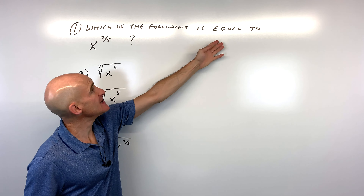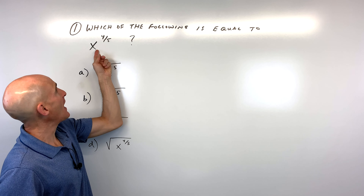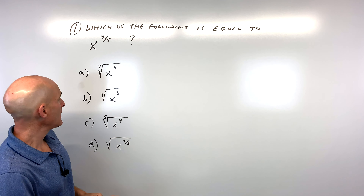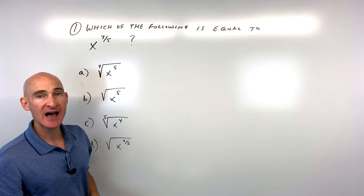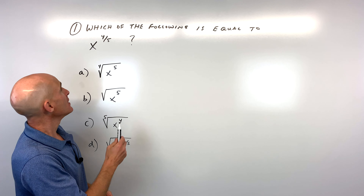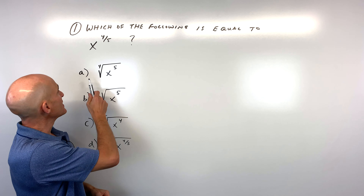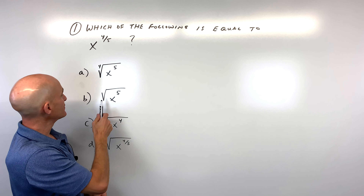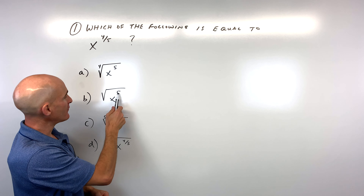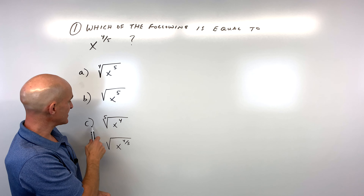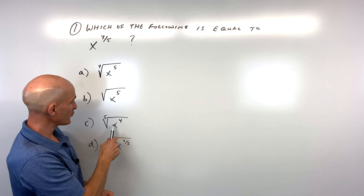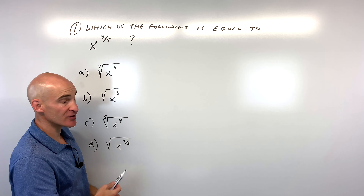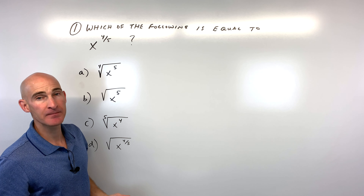Which of the following is equal to x to the four-fifths power? We've got some multiple choice options. Is it A, the fourth root of x to the fifth? Is it B, the square root of x to the fifth? Is it C, the fifth root of x to the fourth? Or D, the square root of x to the four-fifths?